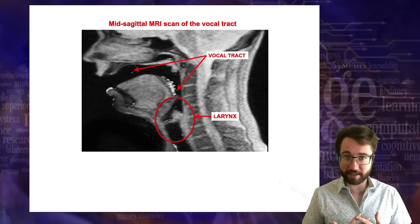Moving farther back, we get palatal fricatives — something English does not have. A palatal consonant is formed by taking the front of your tongue and moving it straight up to touch the hard palate. The stop is 'ça,' the fricative is 'ça' — voiced would be 'ʝa.' These sound a lot like 'sh' but are different. A famous example is German: the word for 'I' — 'ich' — contains a palatal fricative. It's not 'ish,' it's 'ich,' with a palatal fricative.